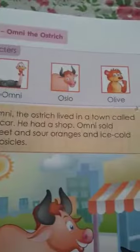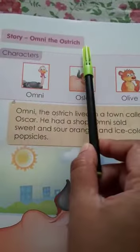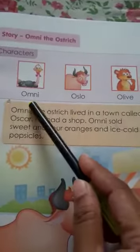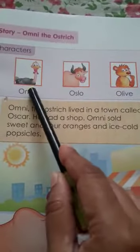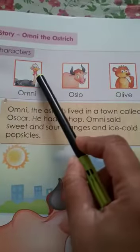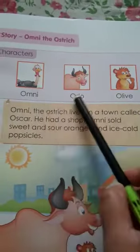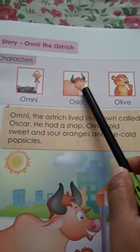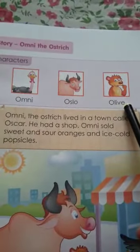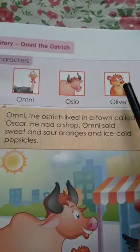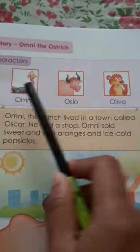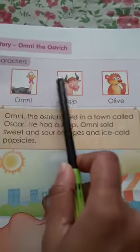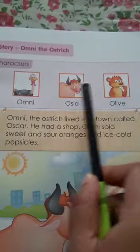Let's see the characters. In this story Omni the ostrich, there are three characters. Omni is the name of an ostrich, Oslo is the name of an ox, and Olive is the name of an otter. So here is the ostrich, ox and otter.